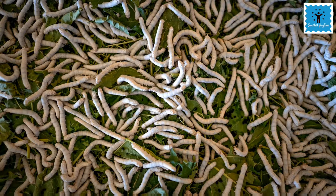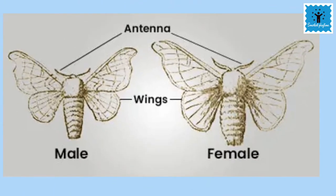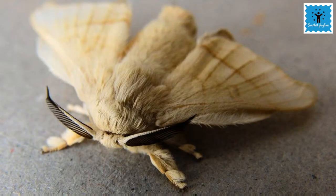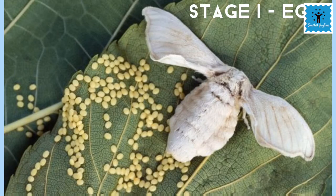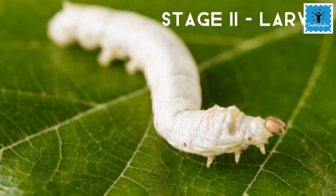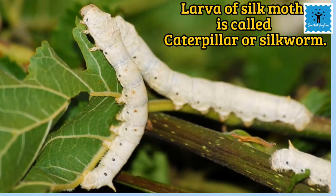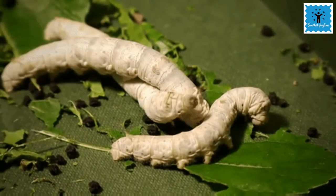Before discussing the process of obtaining silk, it is important to know the life history of the silk moth. The life cycle of the silk moth starts when the female silk moth lays eggs on mulberry leaves. The female can lay more than 300 eggs at a time. The eggs hatch into larvae within a week. The larvae of the silk moth are called caterpillars or silkworms.